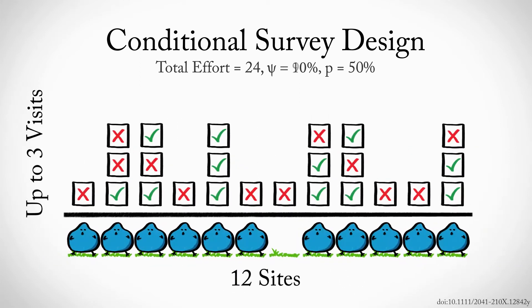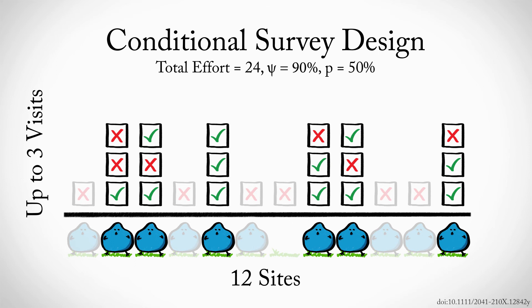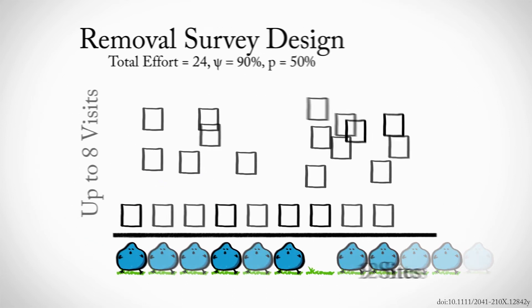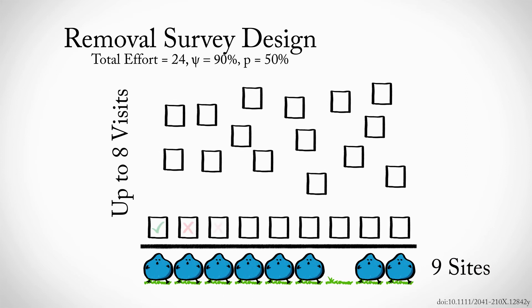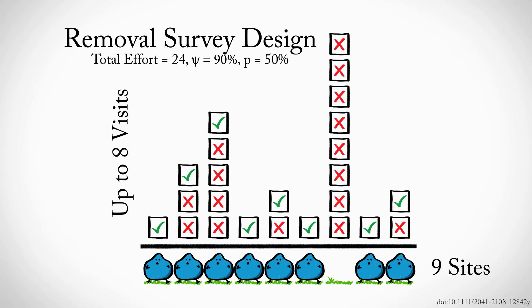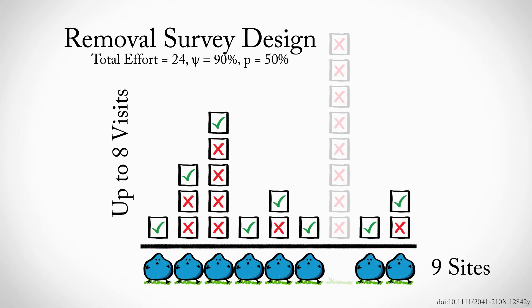The conditional design doesn't work very well for really common species, such as the Big Blue Bird, since it wastes too much effort resurveying sites where we already know the bird is. For common species, it's more important to figure out where the species isn't, which is the domain of the removal survey design. For Big Blue Birds, a removal design would have us survey nine sites until either the bird is detected, or we've completed eight surveys, whichever happens first. By distributing more effort to sites without detections, removal designs reduce the chance that we misclassify occupied sites as unoccupied, providing more accurate estimates of where the species isn't, and thus where it is.